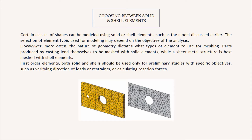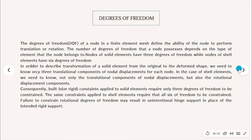Sheet metal structures are best meshed with shell elements. First order elements — both solid and shell — should be used only for preliminary studies with specific objectives, such as verifying direction of load or resistance, or calculating reaction forces. In summary: casting-based parts use solid elements, sheet metal structures use shell elements, and first order solid or shell elements are used for preliminary studies only.